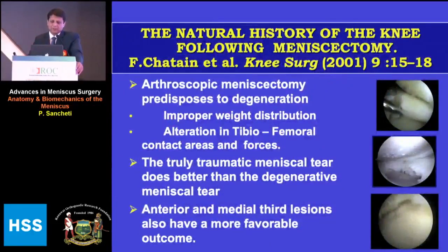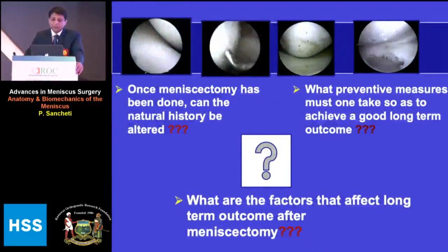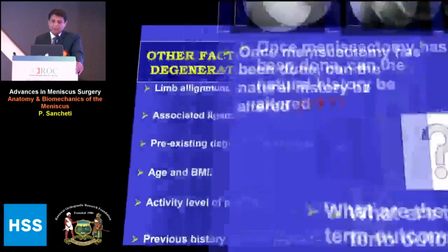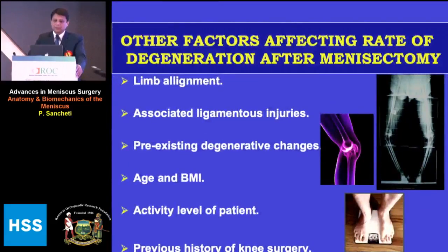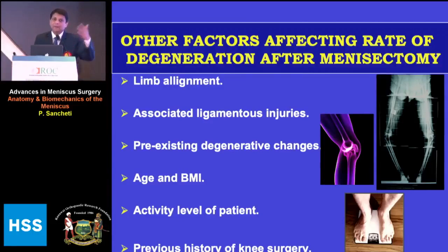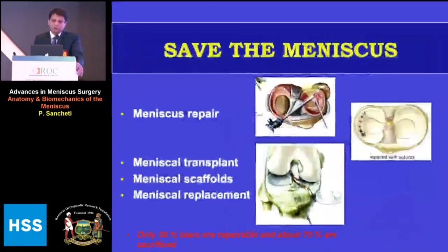Whenever a meniscus is removed, the joint progresses gradually to arthritis. The natural history of a meniscectomy can be influenced by limb alignment, associated ligamentous injury, the patient's BMI, activity level, and prior knee surgery. If you can optimize alignment and stability, the rate of degeneration following meniscectomy can be slowed.